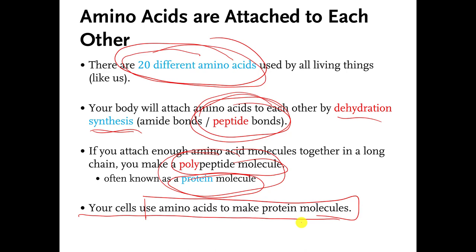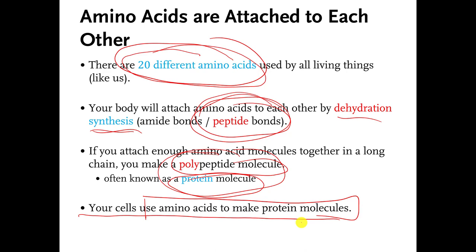Now I'm going to show you the 20 universal amino acids, or at least their names. They are listed alphabetically starting with alanine, arginine, all the way down. Number 20 is valine, if you list them alphabetically.